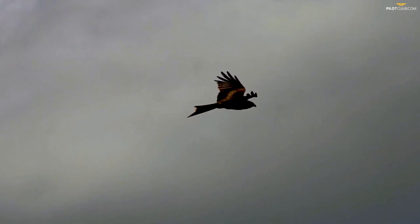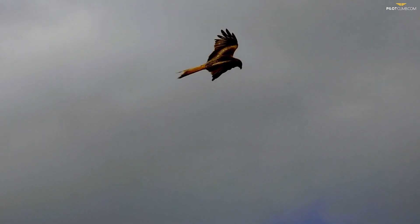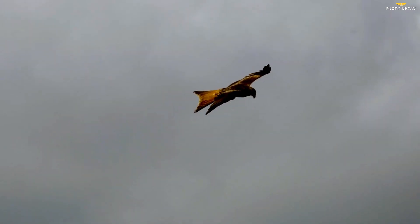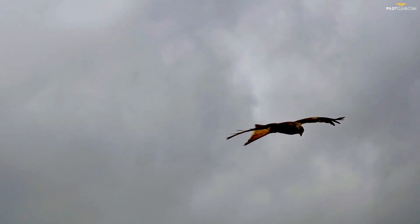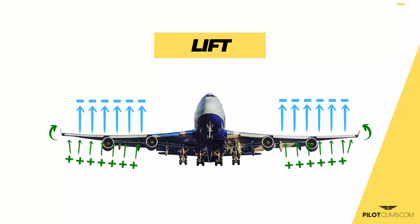Engineers needed to come up with a solution to reduce drag and reduce fuel consumption. They observed that some birds, especially when gliding, had their wings curved upwards. So they tried some tests and saw that by curving the wings upward — introducing winglets — the differential pressure between the upper and lower part of the wing was still equalized at the wing tip, but the vortices created at the top of the winglet were a lot less.